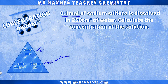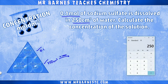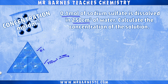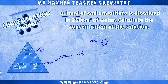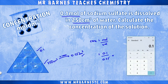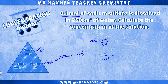To do this we divide by a thousand, so 250 divided by 1000 comes out to 0.25 decimetres cubed. We can now work out the concentration, which is moles divided by volume: 0.1 divided by 0.25, giving an answer of 0.4 moles per decimetre cubed.